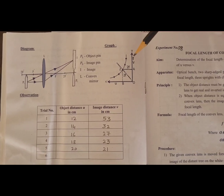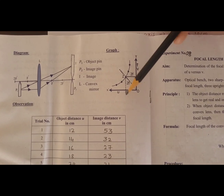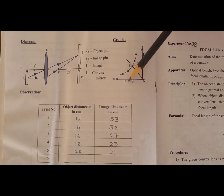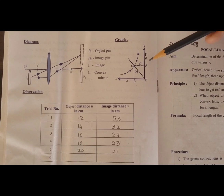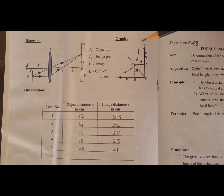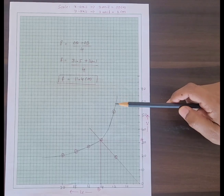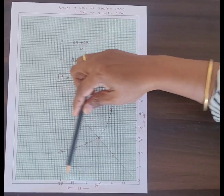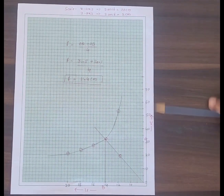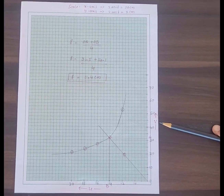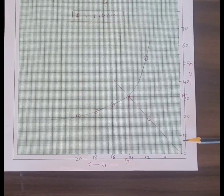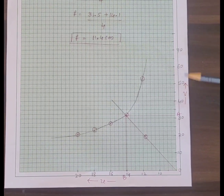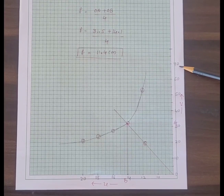This is the nature of the graph. We plot object distance U along the negative x-axis and image distance V along the positive y-axis. Along the y-axis, for every 2 units I have written 10, 20, 30, 40 — so the scale is 2 units equal to 10 centimetres.